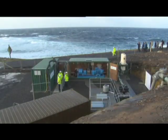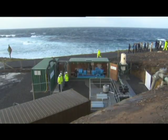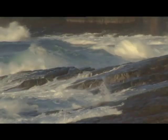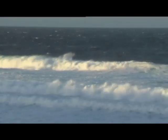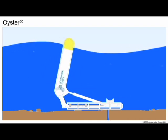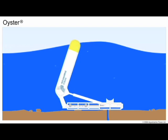Edinburgh-based Aquamarine Power develops wave power technology to capture energy found in near-shore waves and converts it into clean, sustainable electricity. The Oyster wave power device is a buoyant hinged flap which is attached to the seabed at around 10 meters depth and half a kilometer from shore.